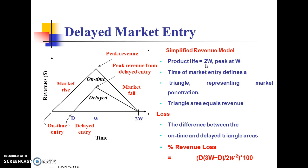In the Revenue Model, product life is equal to 2W and the peak is at W. Time of market entry defines a triangle representing market penetration, where triangle area equals revenue. The difference between the on-time and delayed triangle areas gives the revenue loss. Percentage Revenue Loss = D × (3W − D) / (2W²) × 100.